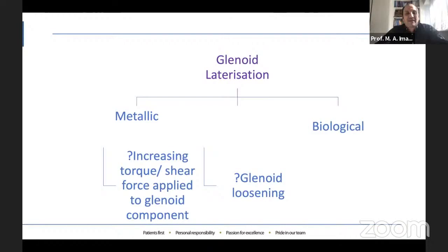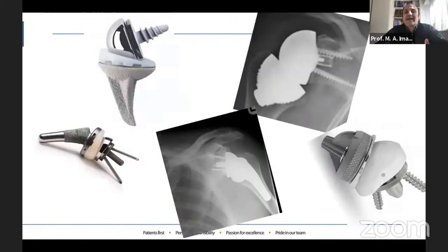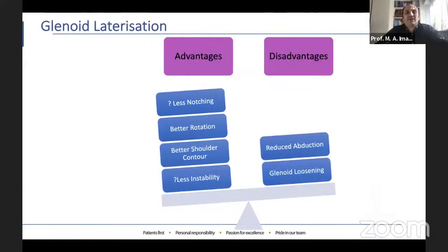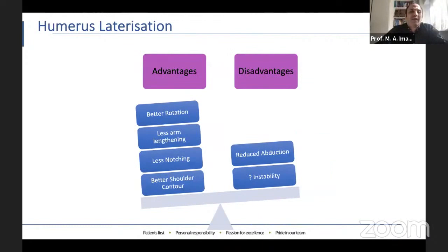You can achieve glenoid lateralization using bone graft, like BioRSA, or metallic grafts. This has led to a huge variety of replacements now available, with different modular and monoblock options, different angles, and different implants and grafts for both the glenoid and humeral sides. If you aim for glenoid lateralization, you achieve less notching, better rotation, better shoulder contour, and less instability — however, you are at risk of reduced abduction and glenoid loosening. If you go for humeral lateralization, you achieve better rotation, less arm lengthening, less notching, better shoulder contour, but you risk instability and reduced abduction.